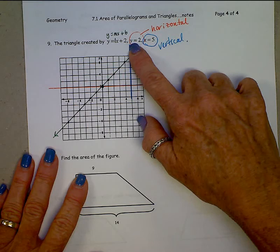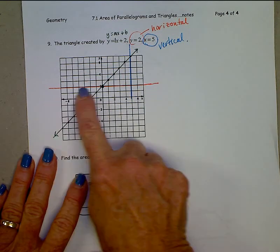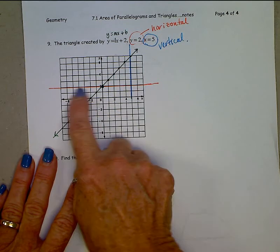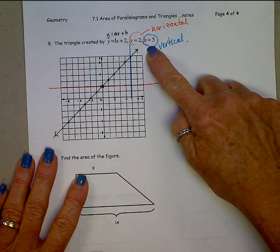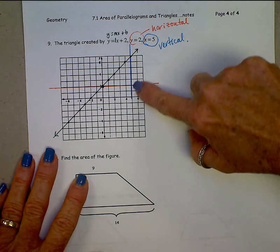This line, y equals 2, that's a horizontal line at a height of 2, that's this orange piece right here. And then x equals 5 is a vertical line on 5 on the x axis and vertical.